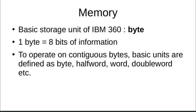The basic storage unit of the IBM 360 machine is a byte, and 1 byte is equal to 8 bits of information. To operate on contiguous bits larger than 8 bits, some basic units are defined: byte, half word, word, and double word.